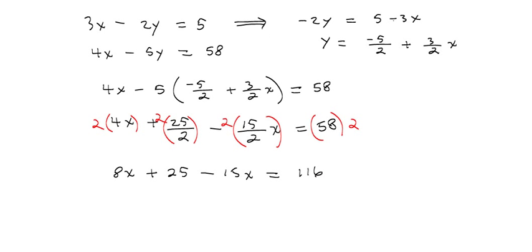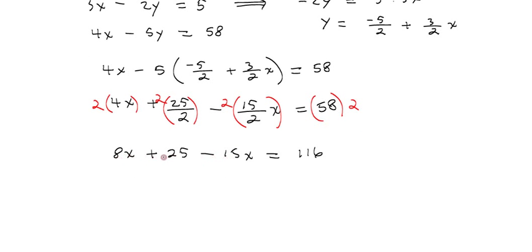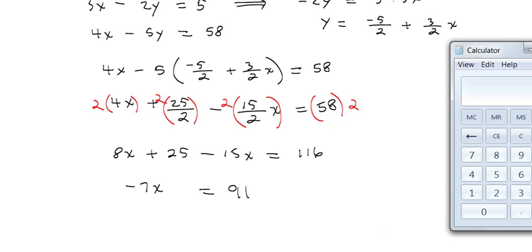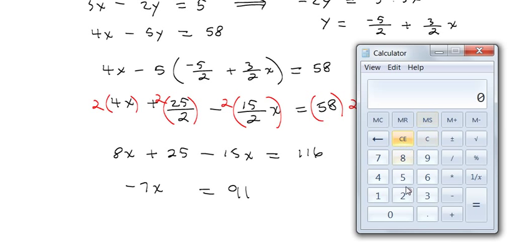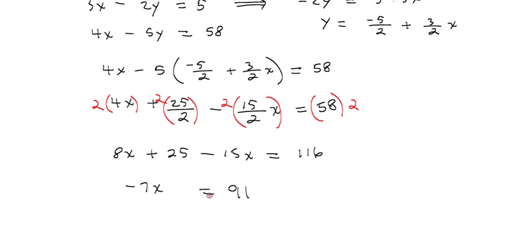Alright, now let's combine our like terms. 8x minus 15x is a negative 7x, is equal to, and you take 116 minus 25. 116 minus 25, I think was 91. Let's check. 116 minus 25, yeah, 91. I just want to double check. Now, divide both sides by a negative 7, x is equal to 91 divided by a negative 7 is negative 13.